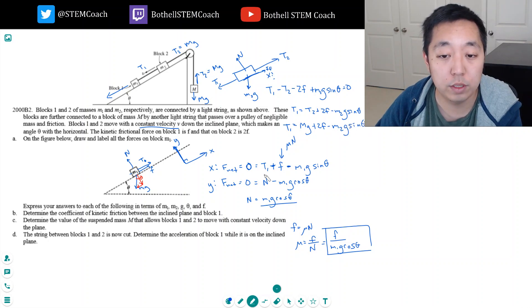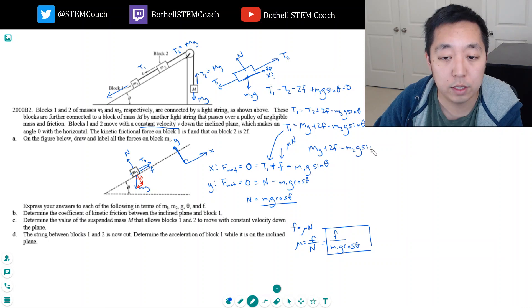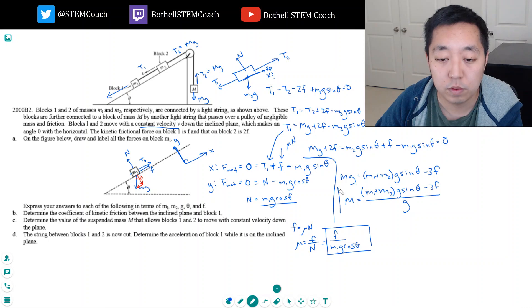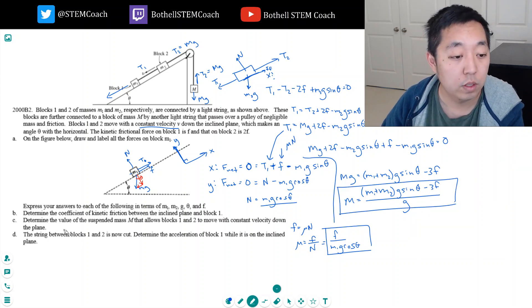And now I'm going to put it into this equation and all of this has to equal zero. So when I plug this into here, I get MG plus 2F minus M2G sine theta plus F minus M1G sine theta has to equal zero. So MG has to equal M1 plus M2G sine theta plus 3F. So M would have to equal M1 plus M2 sine theta minus 3F all over G. So that's C.